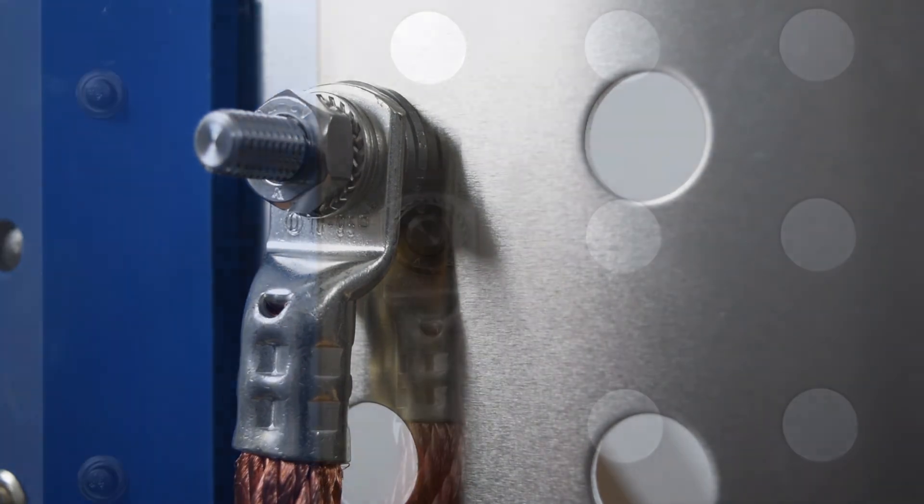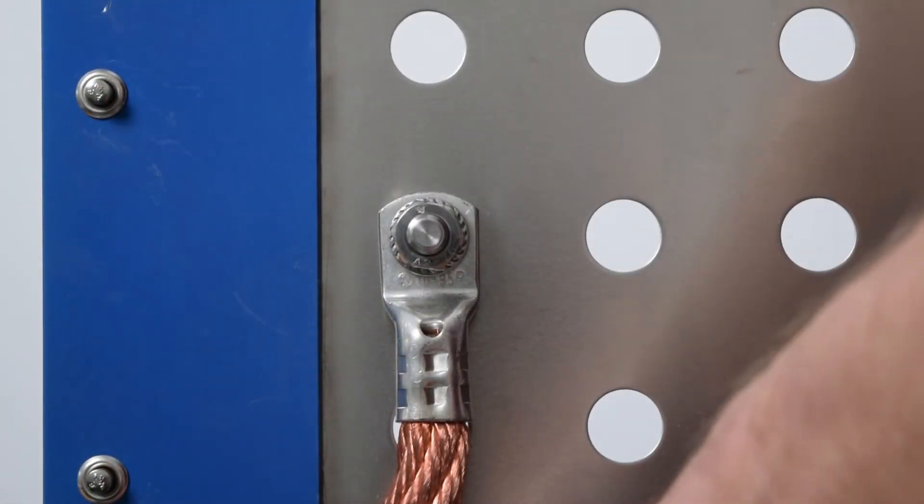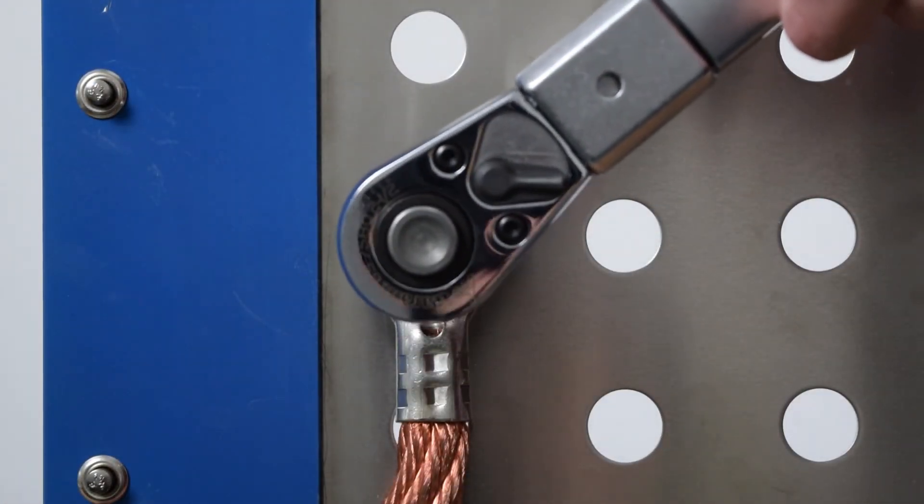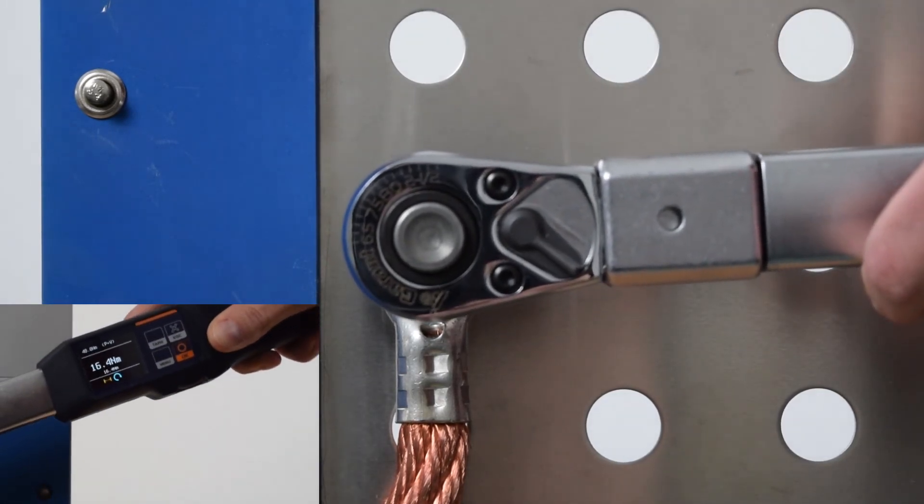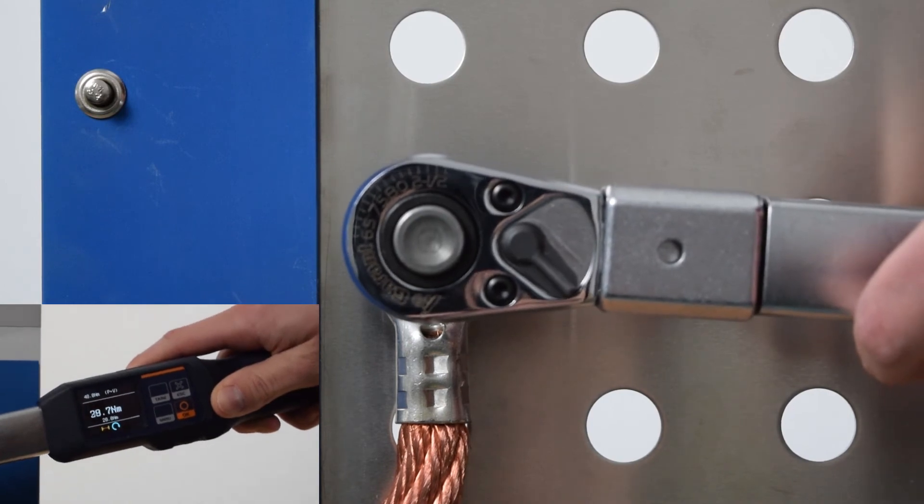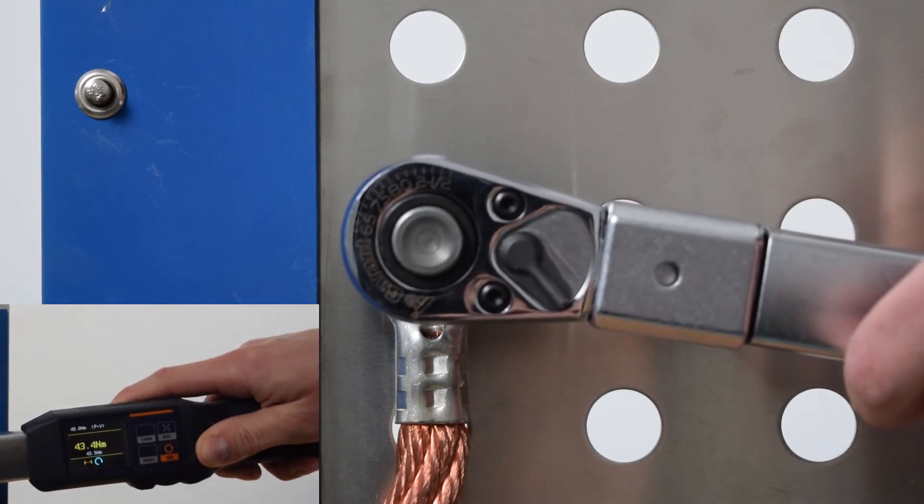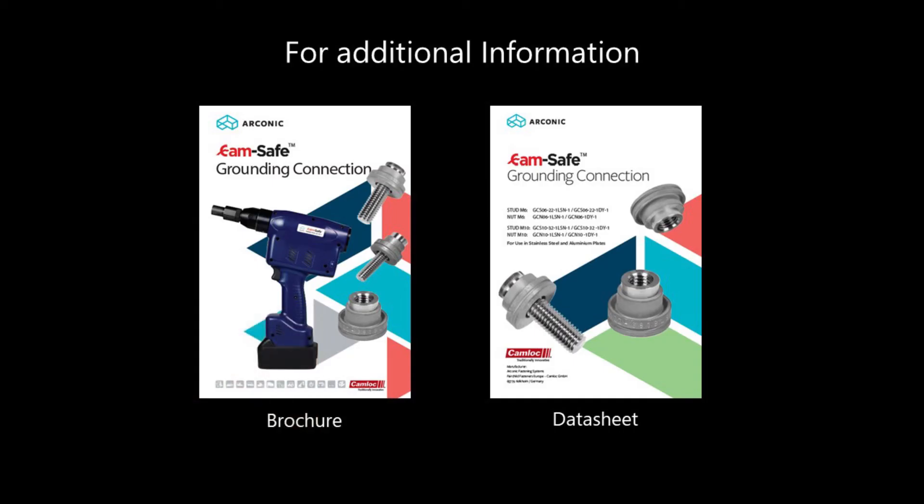The nut must be tightened by means of a torque wrench. The tolerance range of the tightening torque is determined by the respective thread size. In this case, it is a M10 stud with a tolerance range from 40 Nm to 48 Nm. The remaining data can be found in our datasheet or brochure.